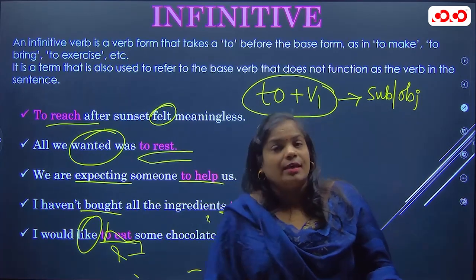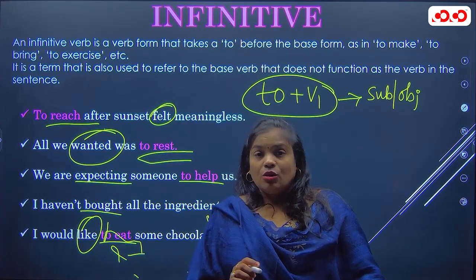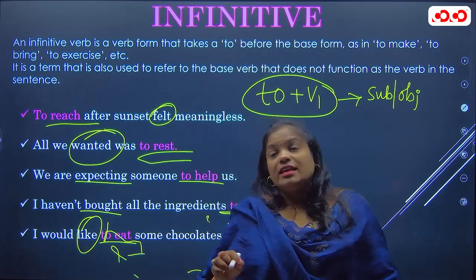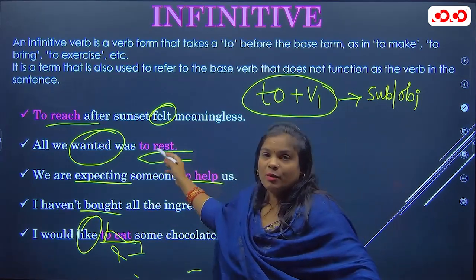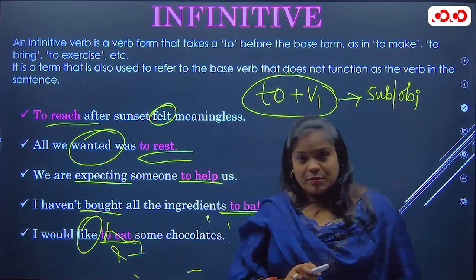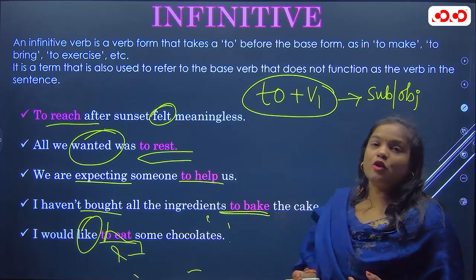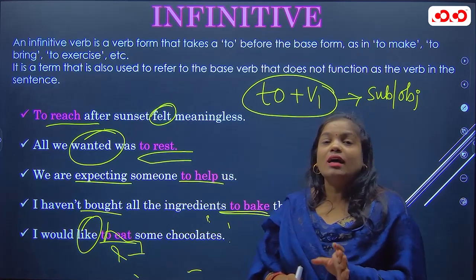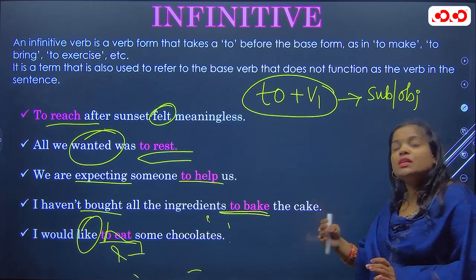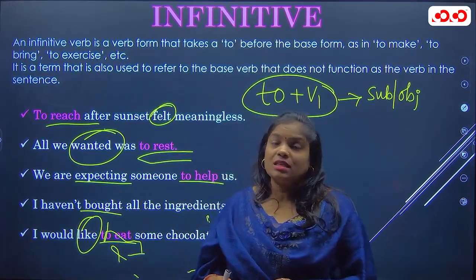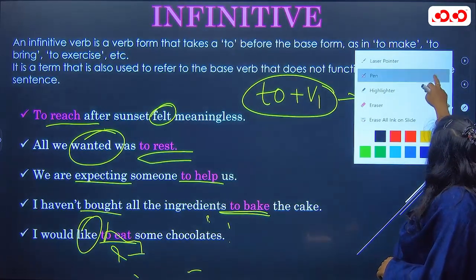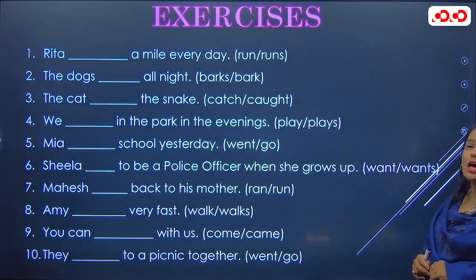So: gerund is ing form of verb acting as a noun; participle is en/ed/ing form of verb acting as an adjective; infinitive is 'to' with verb's first form acting as subject or object. In all three cases, the word looks like a verb but is not doing the work of a verb in the sentence — that is why they are called non-finite verbs. Always identify a word by what work it is doing in the sentence, not just by how it looks.